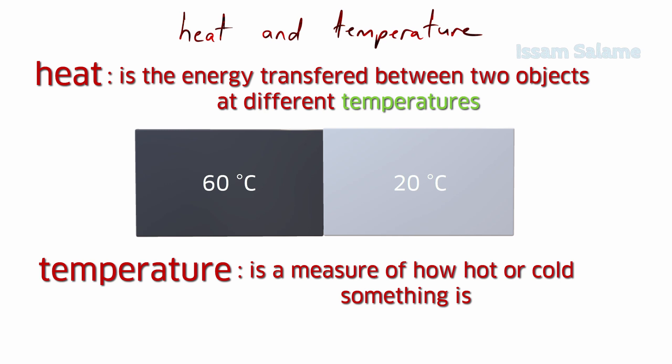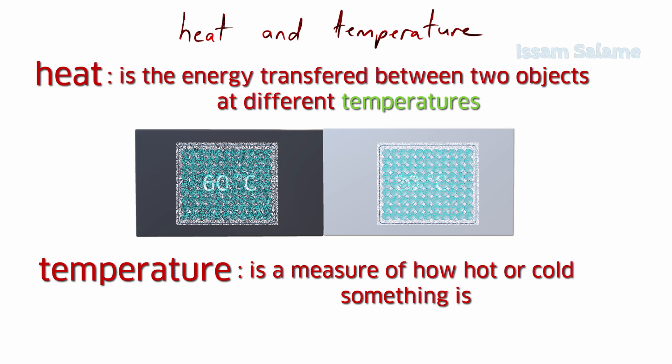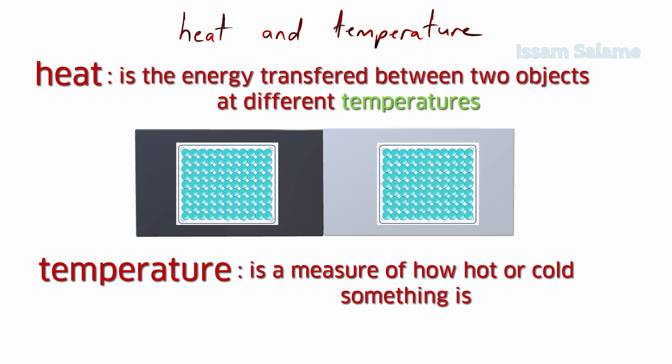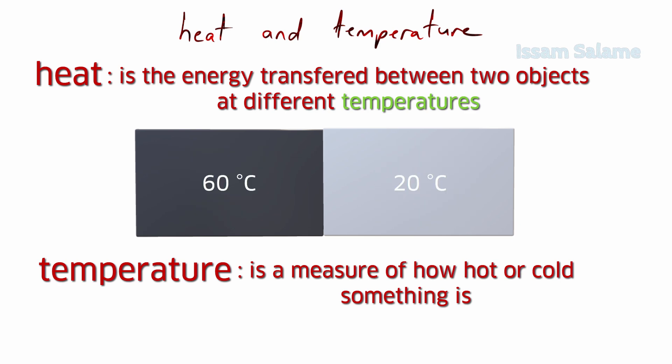To know which block is warmer from these two iron blocks, we measure the temperature. Usually it's difficult to measure the heat stored in an object, while to measure the temperature it's easy - we simply use the thermometer. One thing to mention here is the temperature is a measure of the average kinetic energy of the particles in an object. For example, in the 60 degrees Celsius block, the particles are vibrating faster than the 20 Celsius degrees block, and this is because they have more kinetic energy.